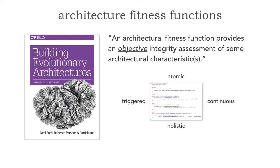Architecture fitness functions were first introduced in the Building Evolutionary Architectures book by Neil Ford, Rebecca Parsons, and Patrick Kay. They defined an architecture fitness function as follows: an architecture fitness function provides an objective integrity assessment of some architectural characteristic, such as scalability, responsiveness, or performance — any kind of characteristic of your architecture.